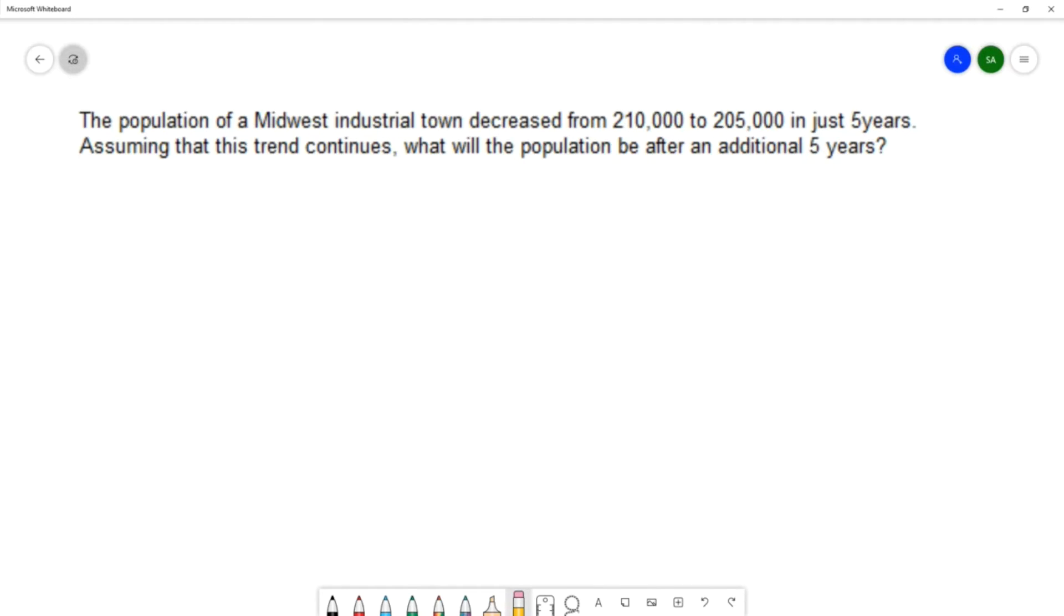In this example, we're going to assume a population decay model. I'm calling it a decay model because our population starts at 210,000 and decays to 205,000. We want to use the population decay model, which looks like this: P equals P₀e^(kt).